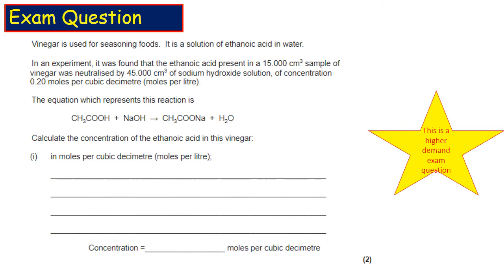Let's look at an exam question. Vinegar is used for seasoning food. It's a solution of ethanoic acid in water. In an experiment, it was found that ethanoic acid present in a 15 cm³ sample of vinegar was neutralised by 45 cm³ of sodium hydroxide solution of a concentration of 0.2 mol/dm³.